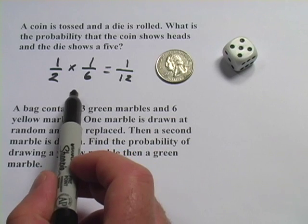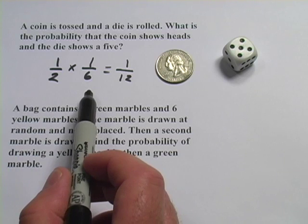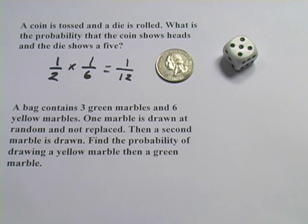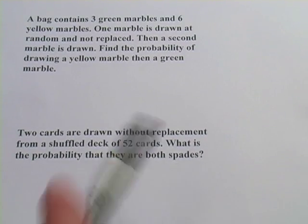So that's the key thing to remember when you have multiple events: you need to figure out the probability of each event and then multiply them together. Multiply for multiple events. Alright, let's look at another one here.